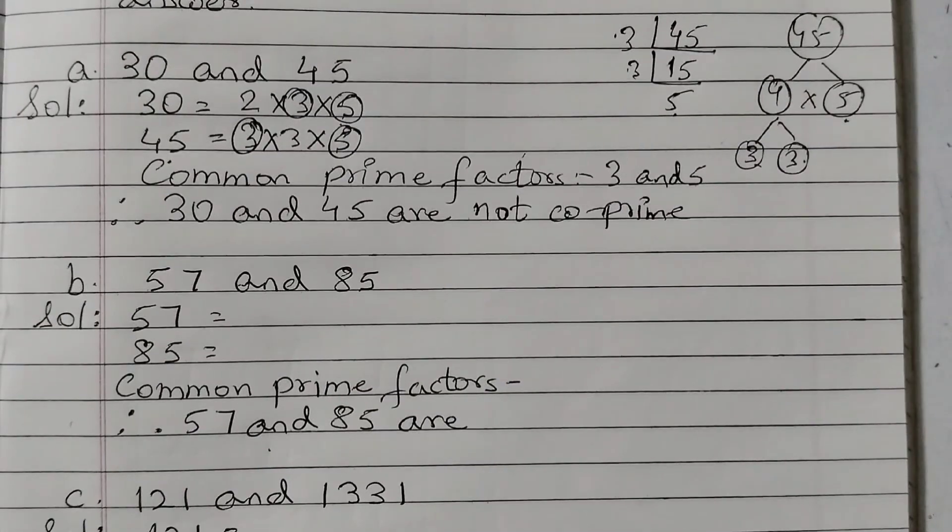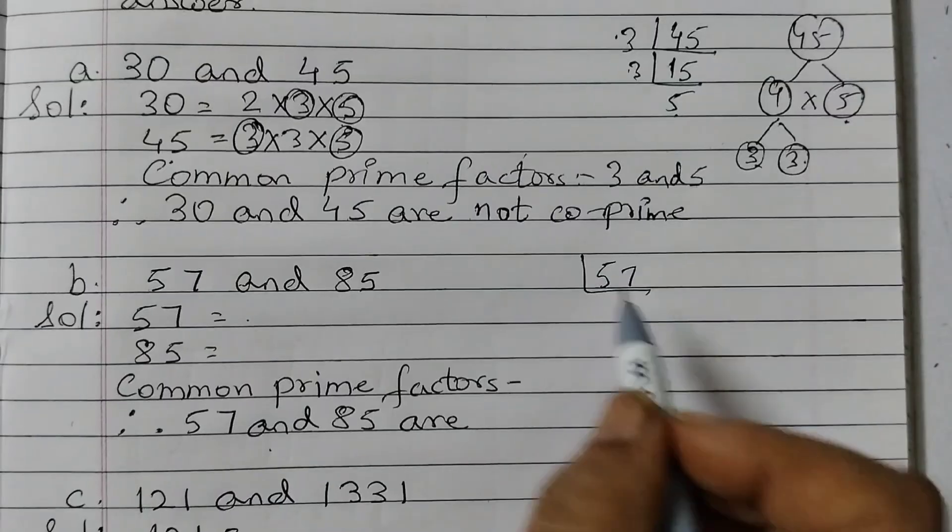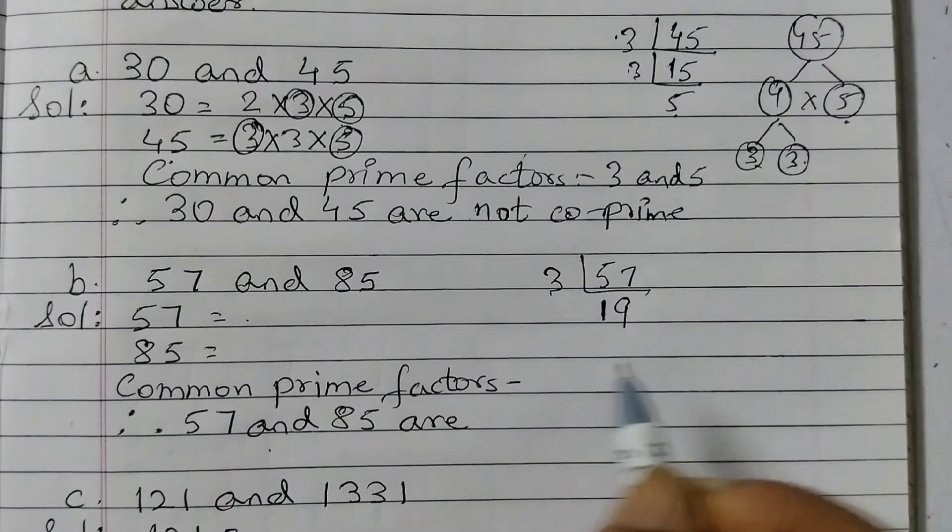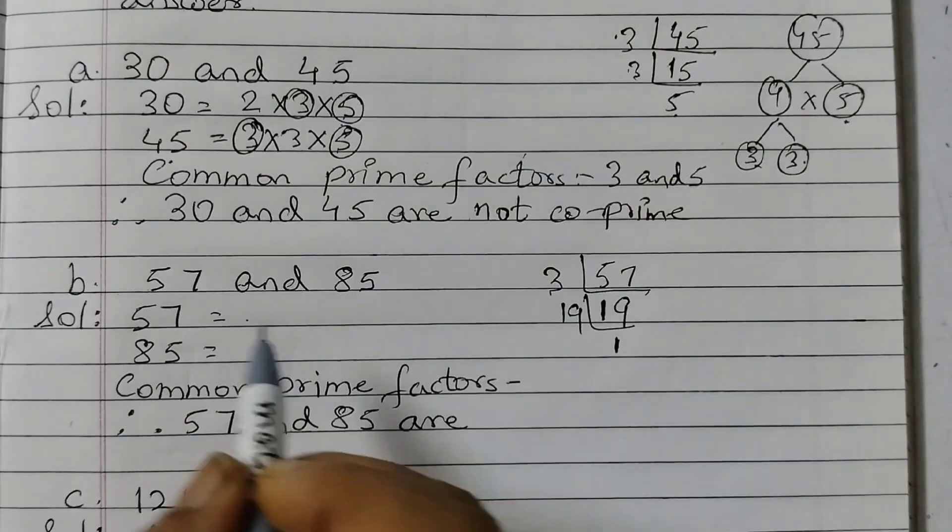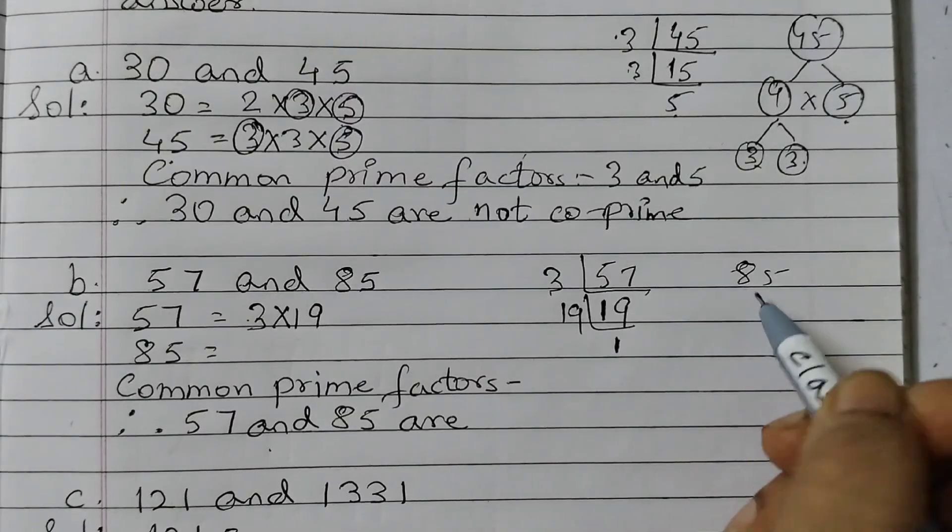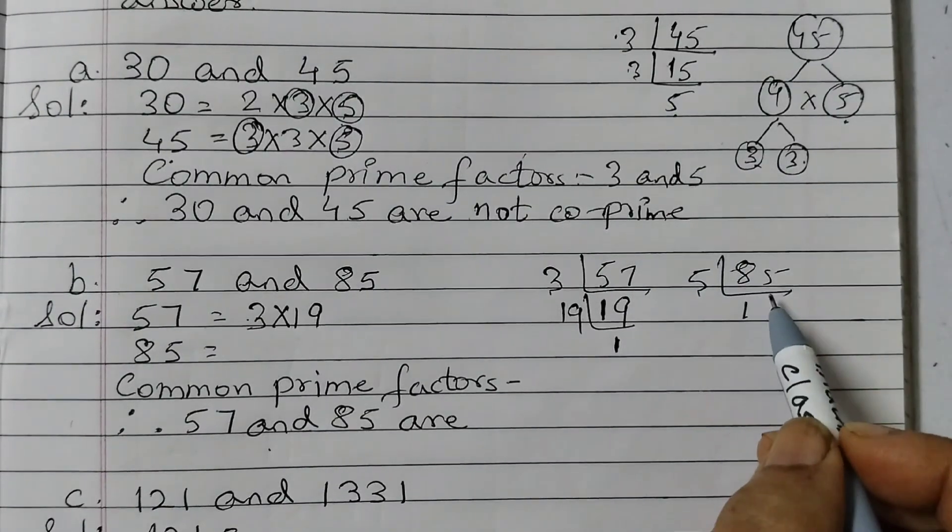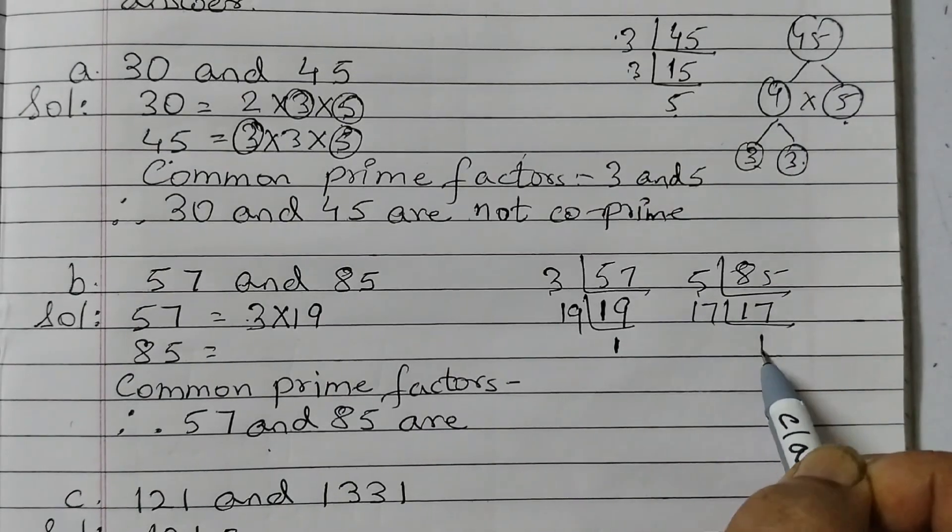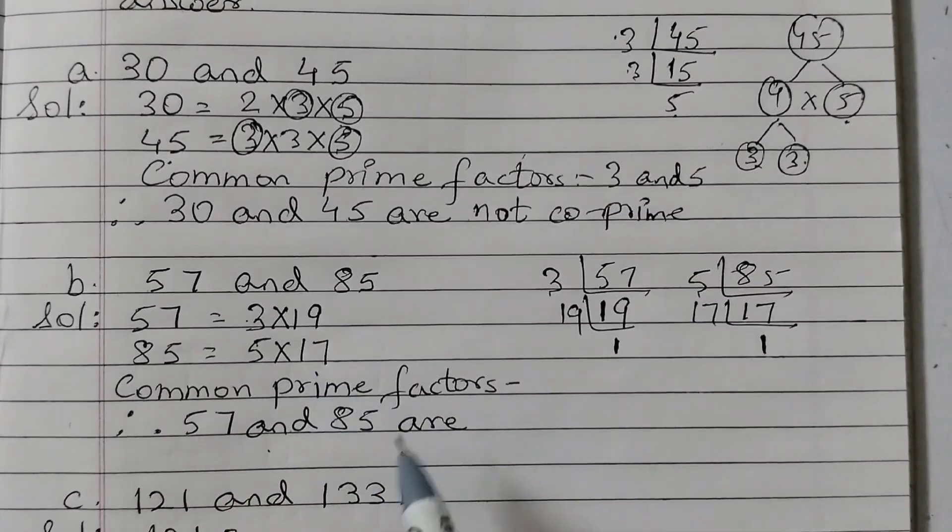Moving on to the next one, 57 and 85. So if you do the prime factorization of 57, 3 ones are 3, 27, 3 nines are 27. Both 3 and 19 are prime numbers. So this can be written as 3 into 19 and 85 we can divide by 5. 5 ones are 5, 35, 7. 17 and 5 both are prime numbers. So this is 5 into 7.